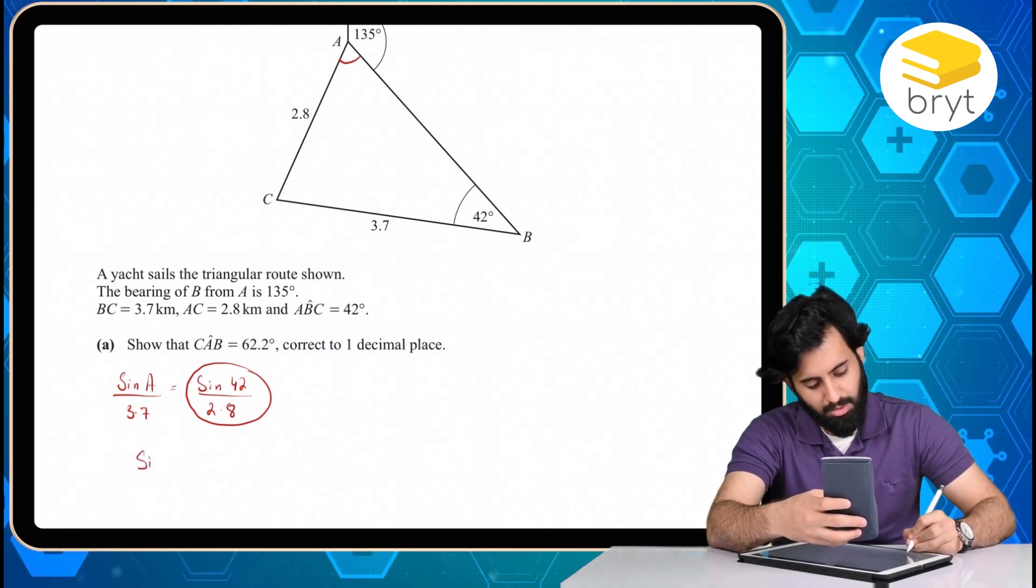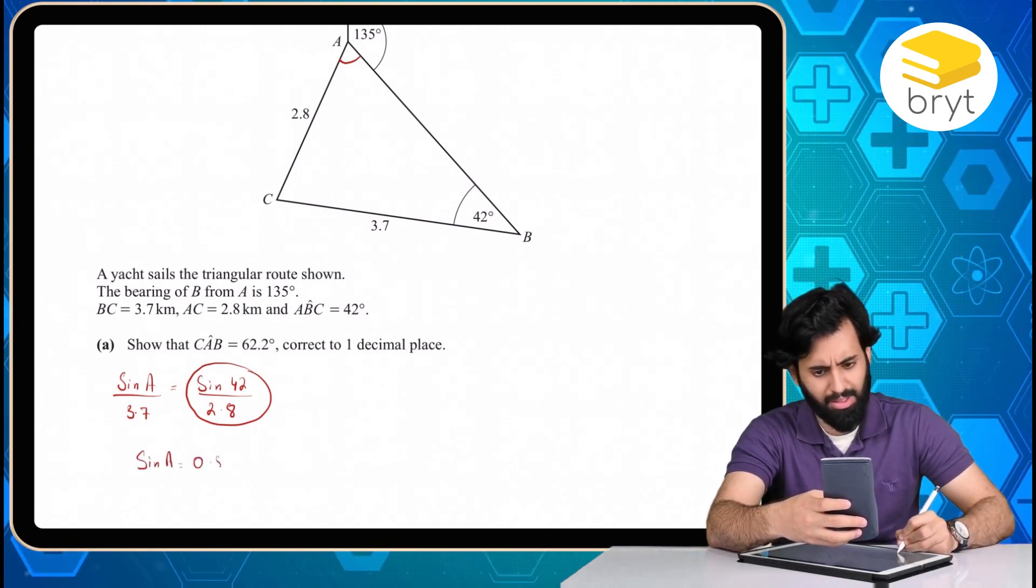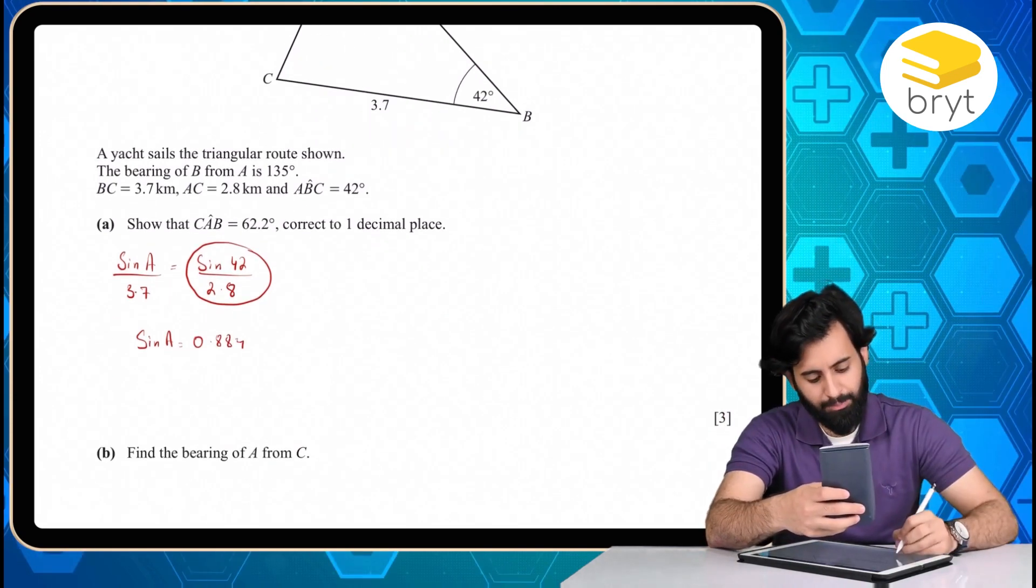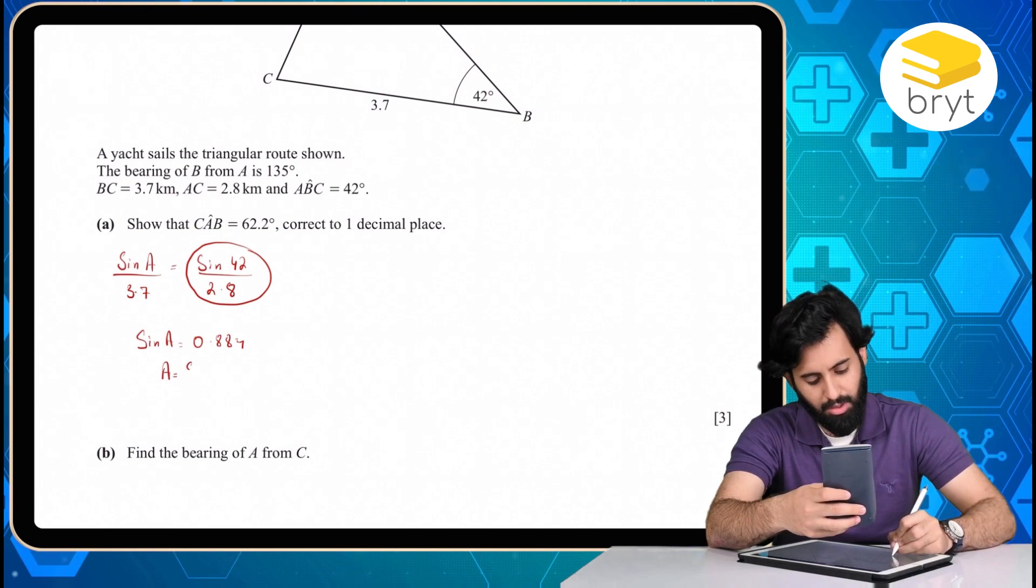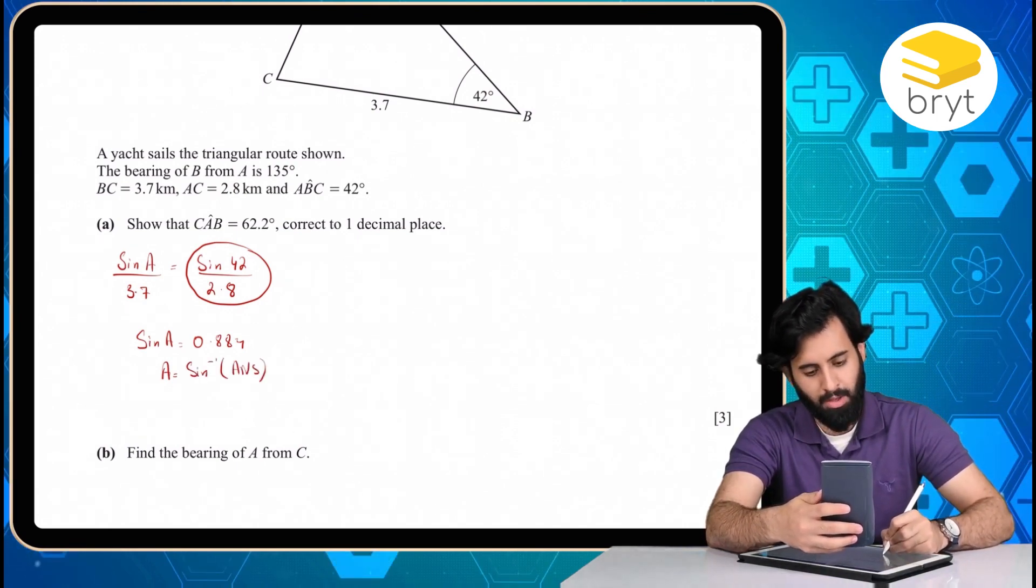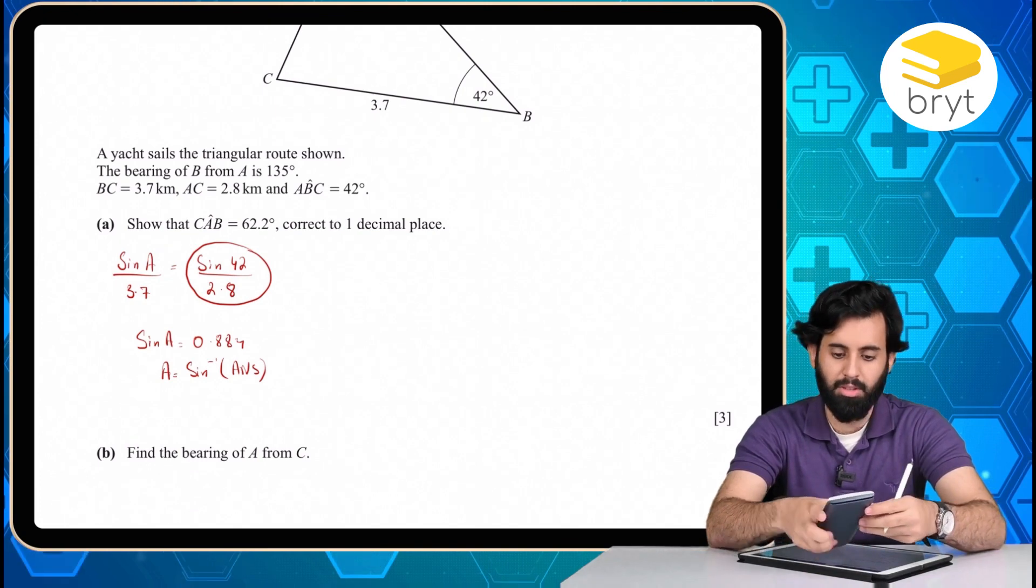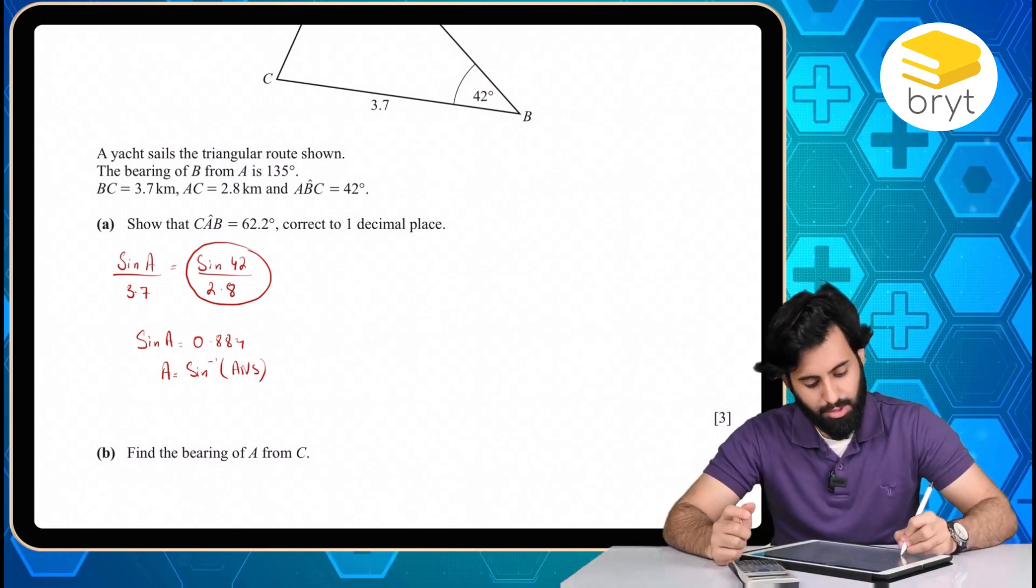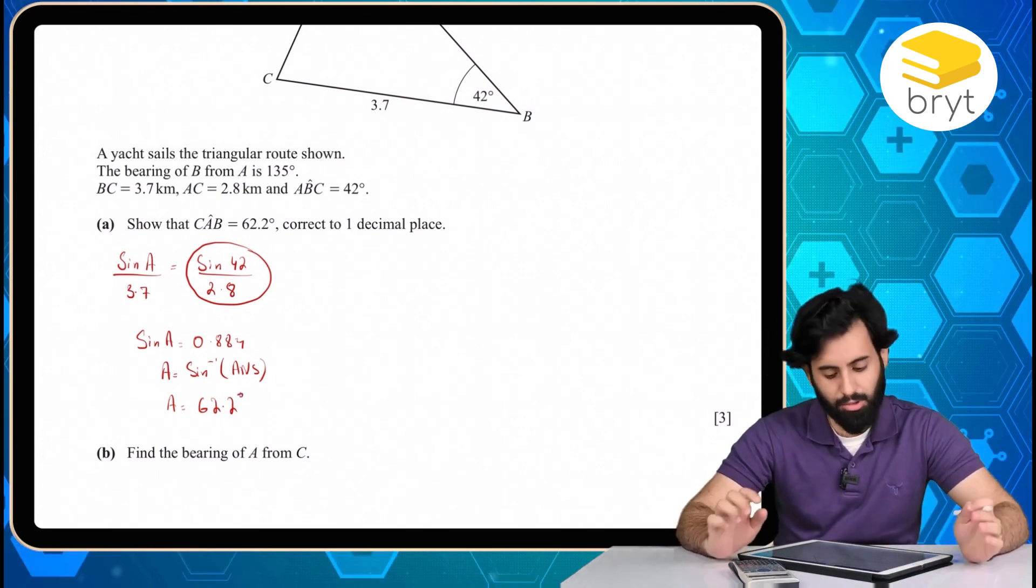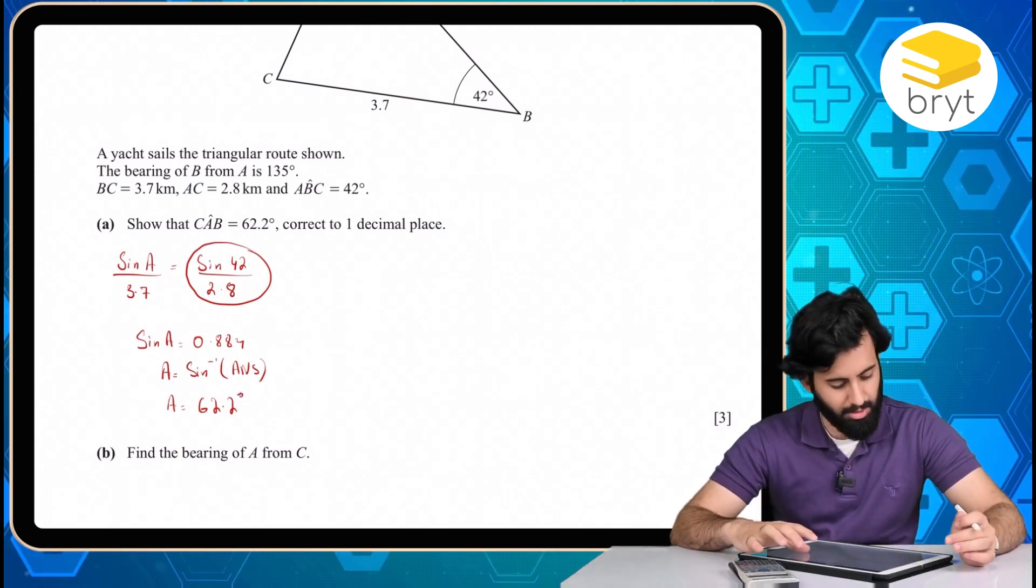So now I know that sine A is equal to a certain value, which is 0.884 something. Now I'm going to, in order to find out A, I'm going to take the sine inverse of the answer. And make sure that you also use the answer key. So I'm going to take sine inverse of the answer, so I get 62.15, which is equal to 62.2, correct to one decimal place. Hence shown, guaranteed three marks in the bag.